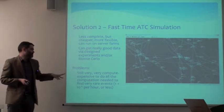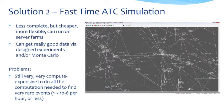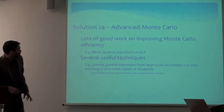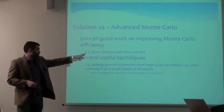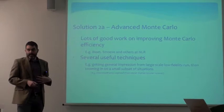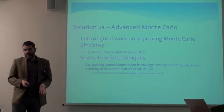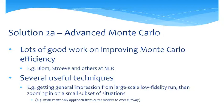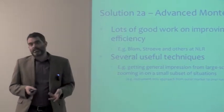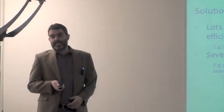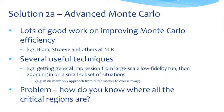It's still very expensive to find very rare events. In aviation, if an event is going to happen once every million flight hours but cause a catastrophe, we really want to know about it. There is lots of good work from people like Henk Blom, Sybert Stroeve, and the like at NLR on improving Monte Carlo efficiency — techniques for cutting down the number of runs needed to achieve a given level of coverage of critical situations, such as doing large-scale runs then zooming in on areas that seem particularly dangerous.